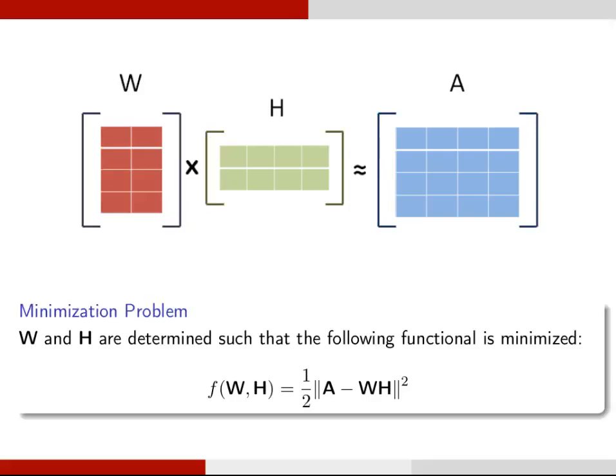As A is approximated by WH, the problem reduces to a minimization problem. W and H are determined such that the norm of A minus WH is minimized.